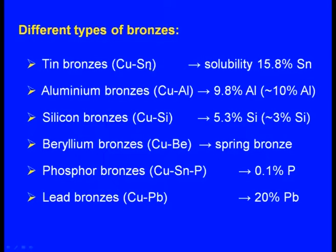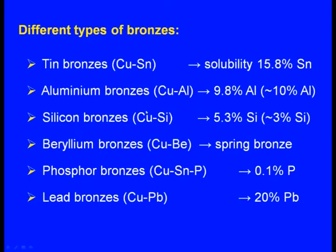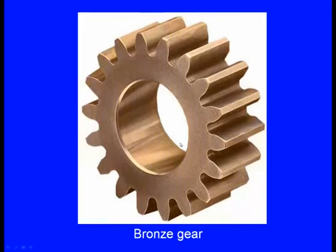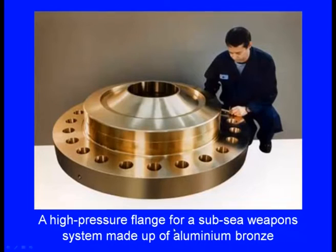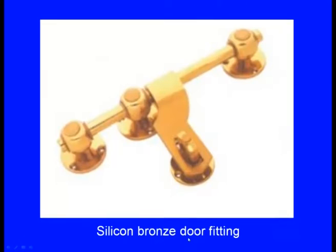Different types of bronzes: tin bronze (copper-tin solubility is 15.8% tin), aluminum bronze (about 10% aluminum), silicon bronze (5.3% silicon), beryllium bronze, phosphorus bronze, and lead bronze. Typical components include a bronze gear, a high pressure flange for a subsea weapons system made of aluminum bronze, silicon bronze for door fittings, and phosphor bronze cables.